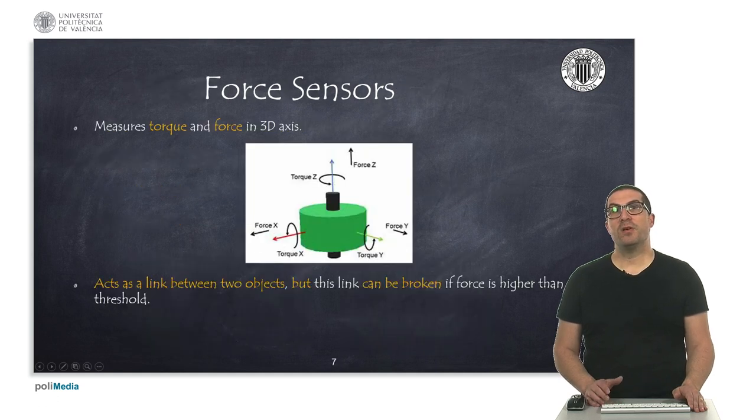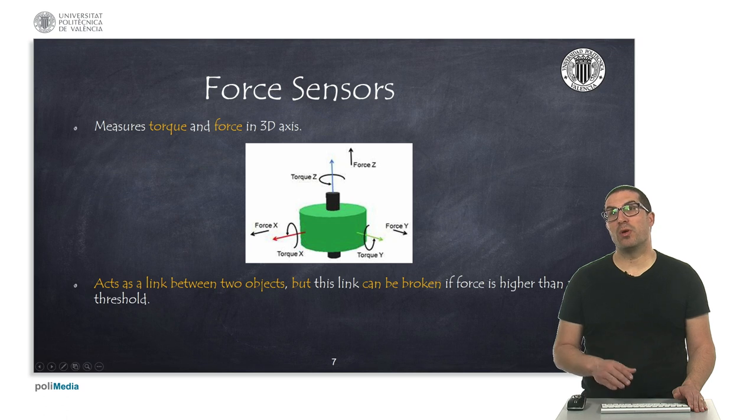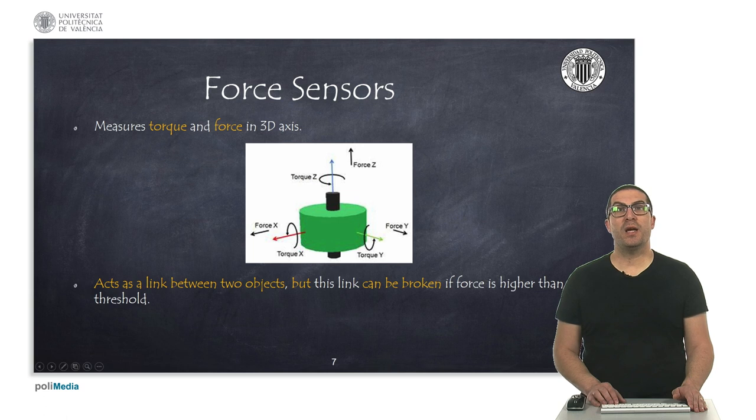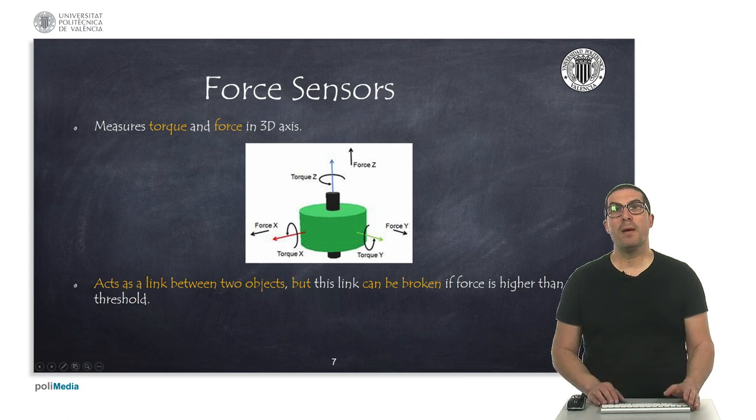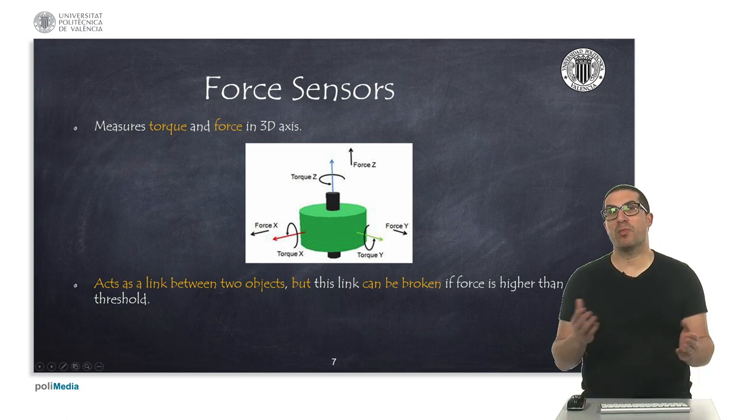Finally, force sensors allow you to measure torque or forces in the 3D axis, as is shown in the figure. They act as links between two objects, so they make that the two objects are linked together. But this link is weak because it could be broken if the force that this sensor supports is higher than a given threshold.